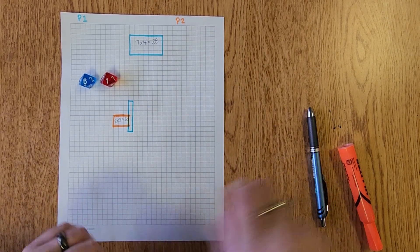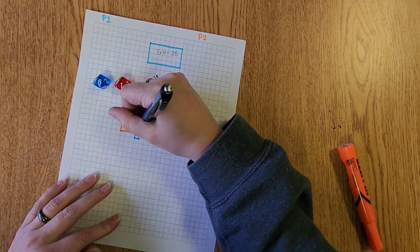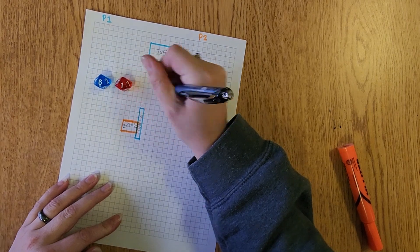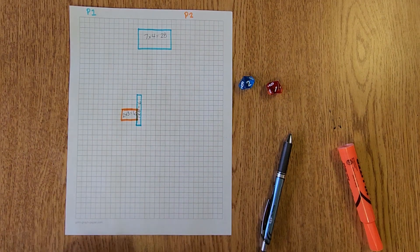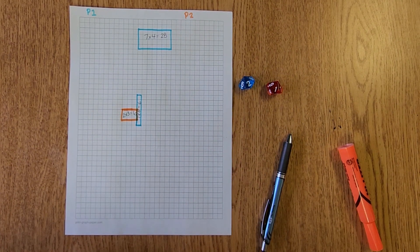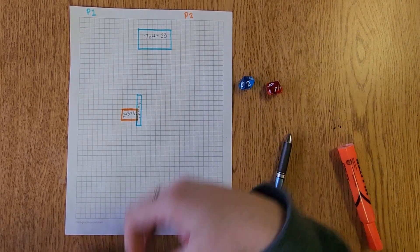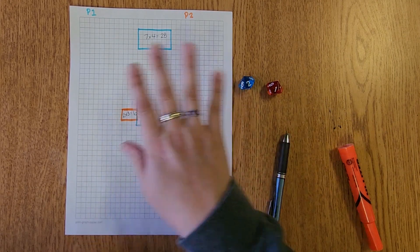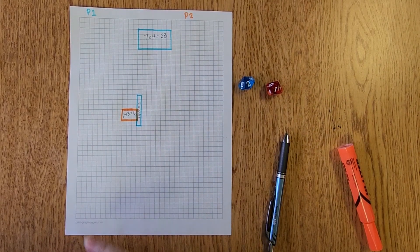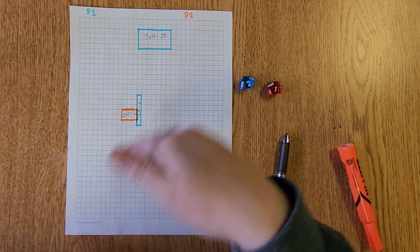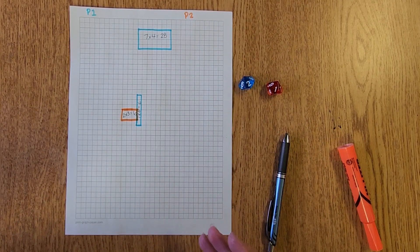But play would continue until there's no space left on the board. If you roll one that does not fit, for example if I rolled 10 times 10 and was unable to fit the 100 on the space, then my turn is over and it would be the next player's turn. We are trying to use up as much space as possible by practicing all of our facts.